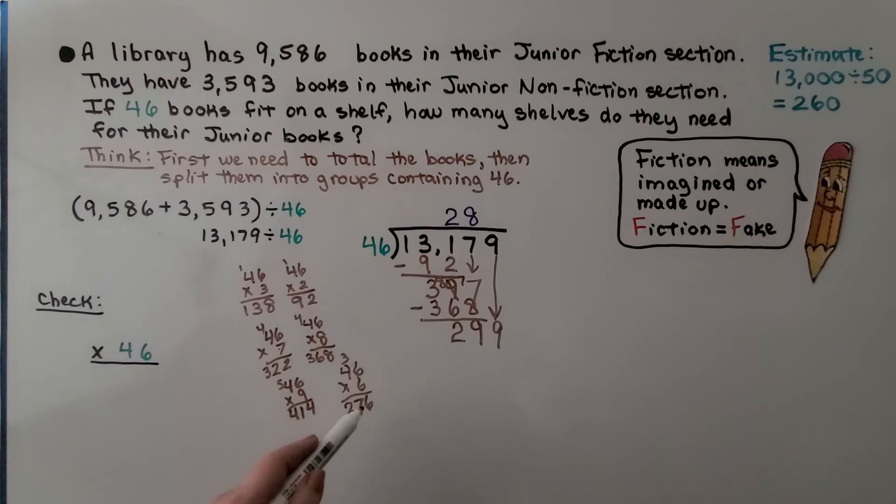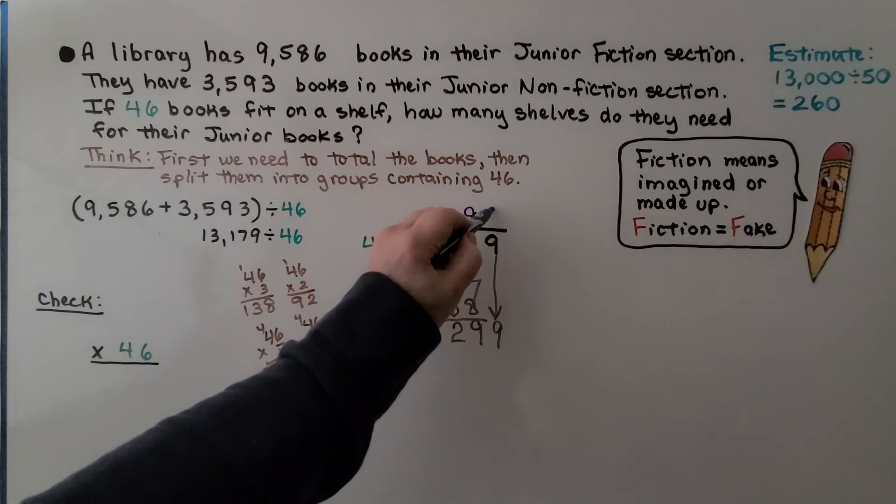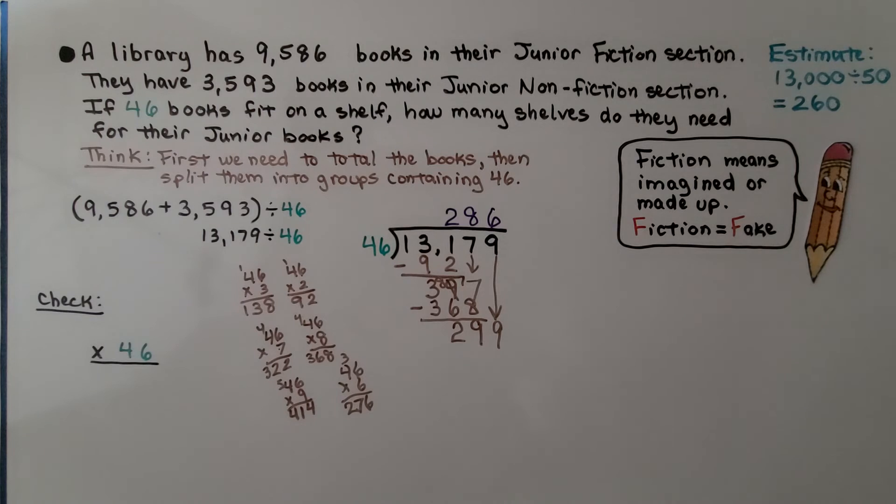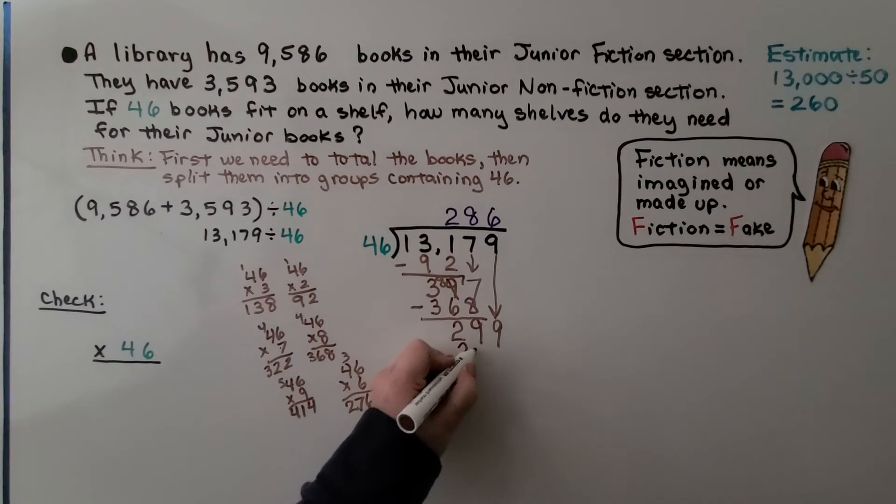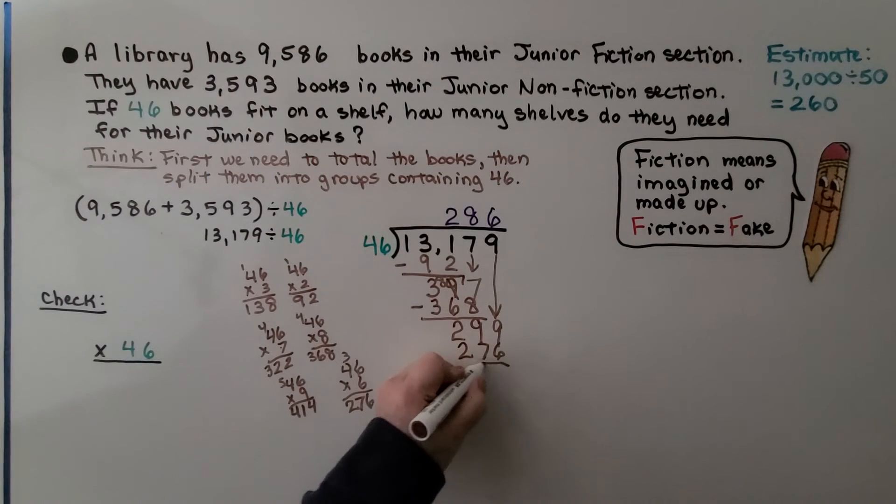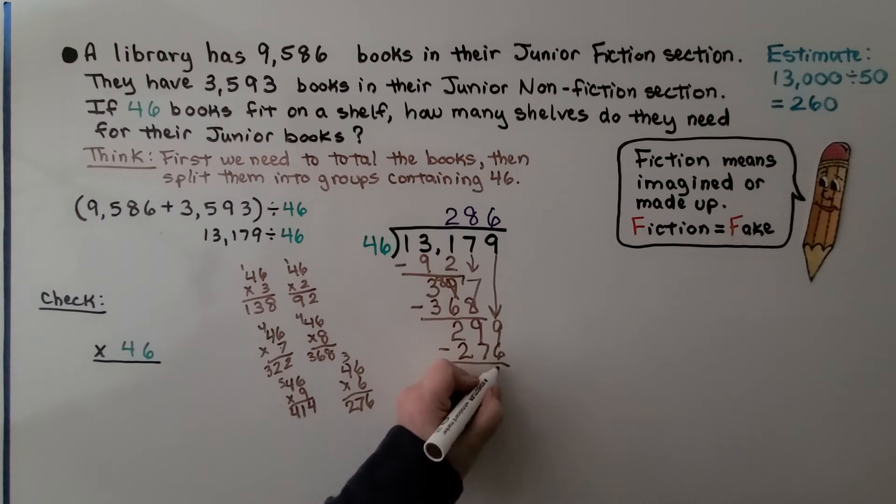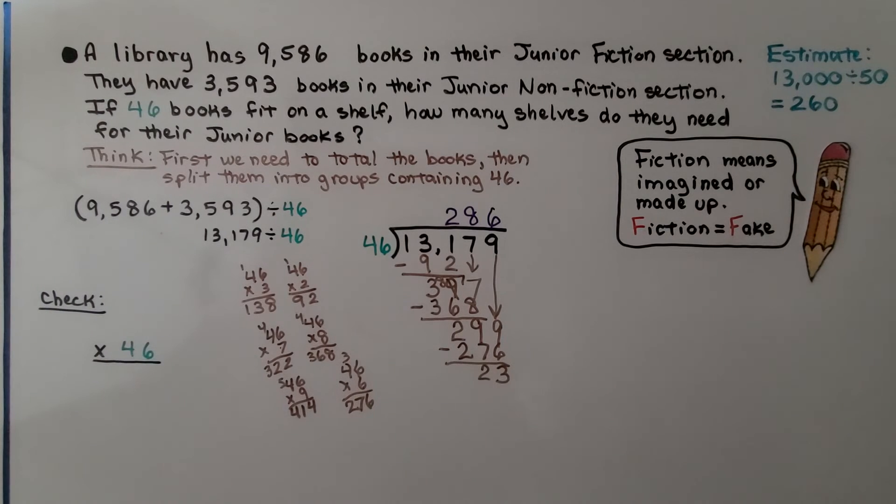So we're going to put a 6 up here above the 9 on our quotient because that's the number we dropped down. And now we know that 46 times 6 is 276. I'm going to subtract that amount. 9 take away 6 is 3. 9 take away 7 is 2. That means our remainder is 23.